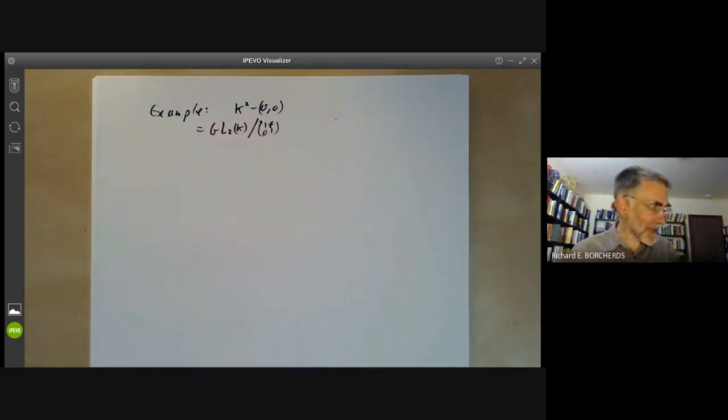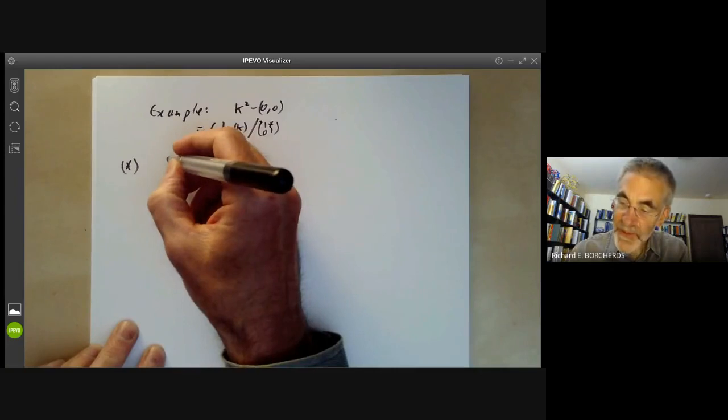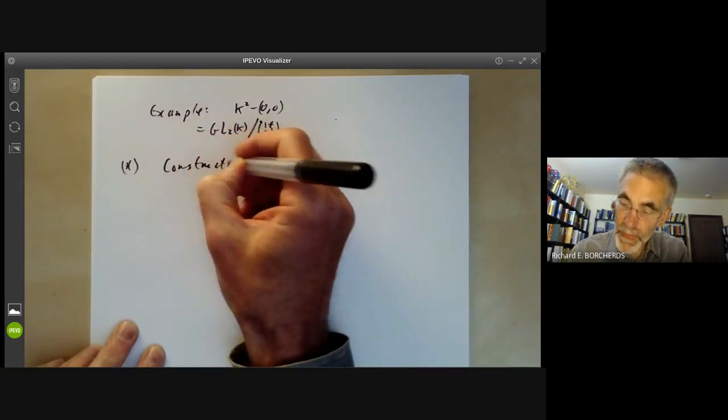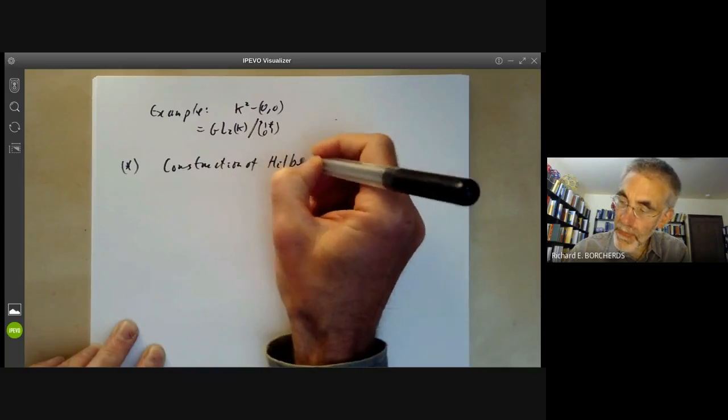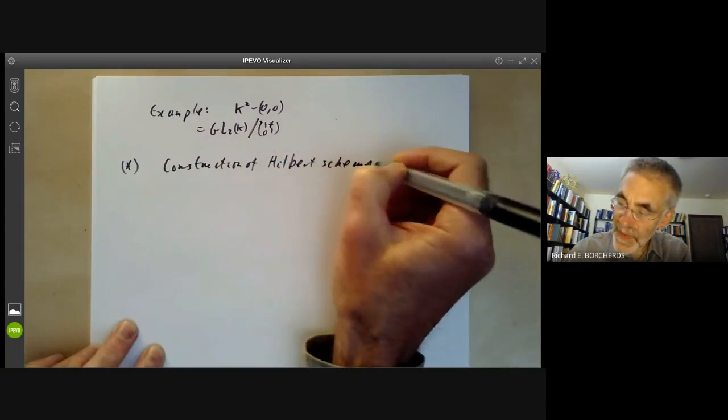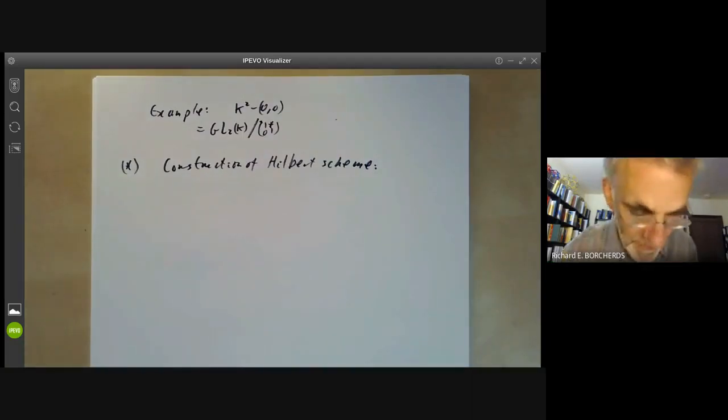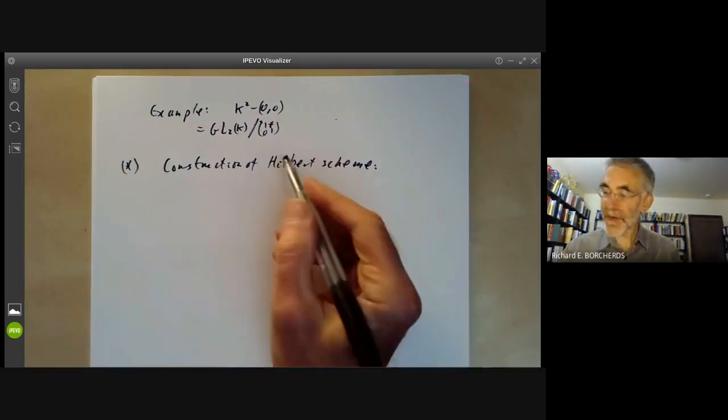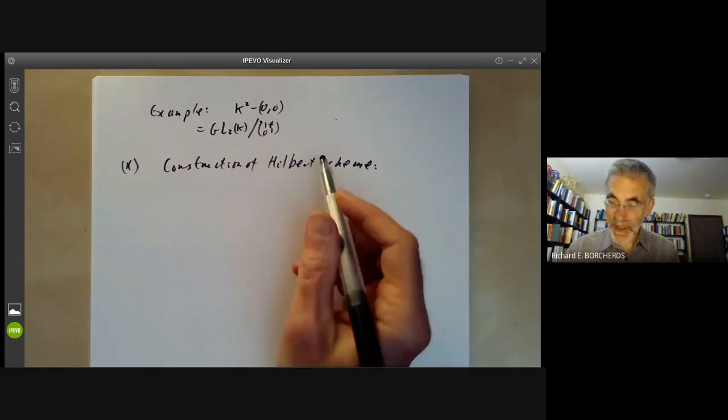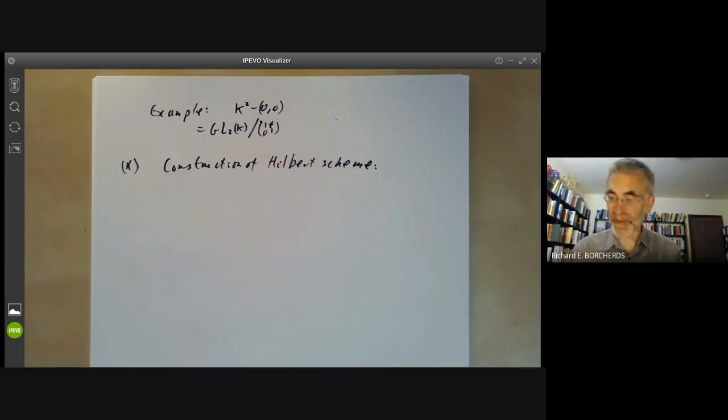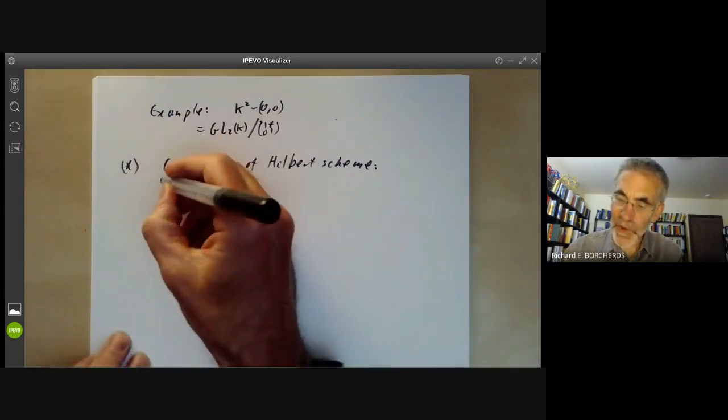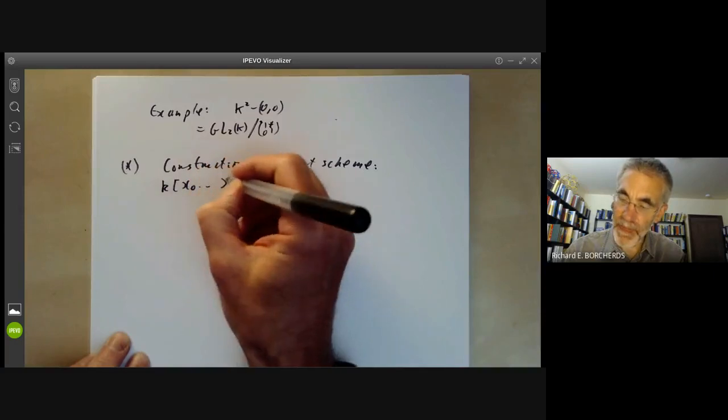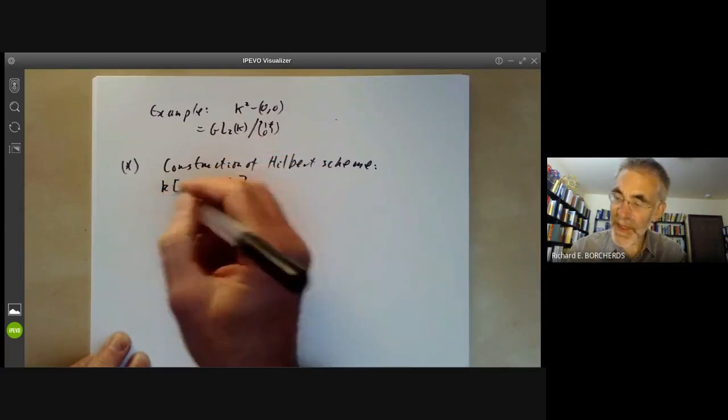So another application is it's used by Grothendieck in a construction of a Hilbert scheme. Okay, we haven't actually defined schemes yet, so I'm going to have to fudge a little bit. The idea of a Hilbert scheme is it parameterizes sub-schemes of projective space. Well, what does that mean? Well, you take the coordinate ring of projective space.